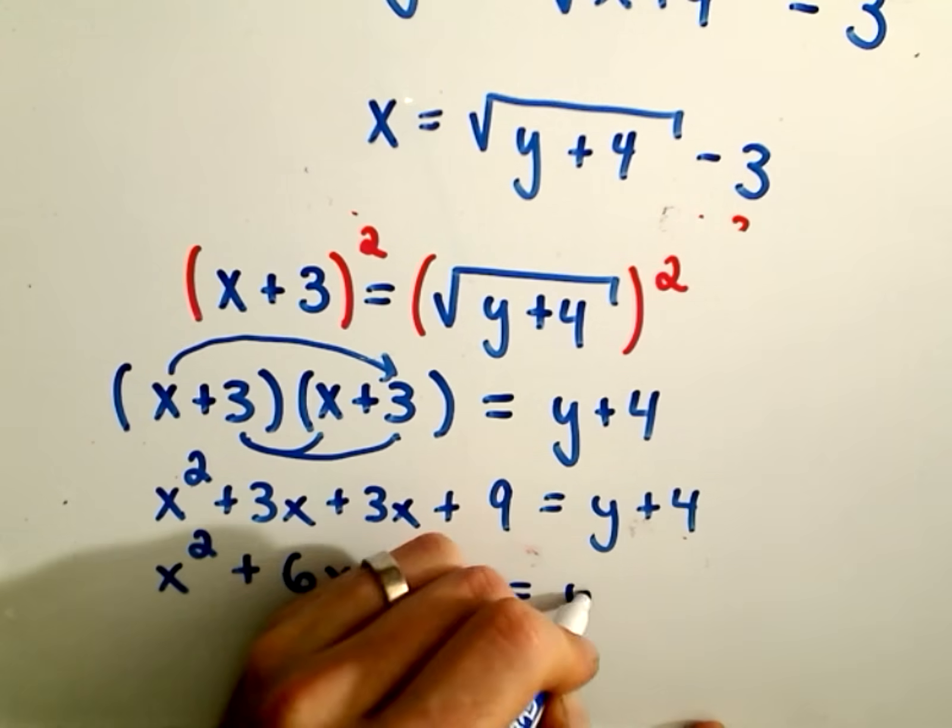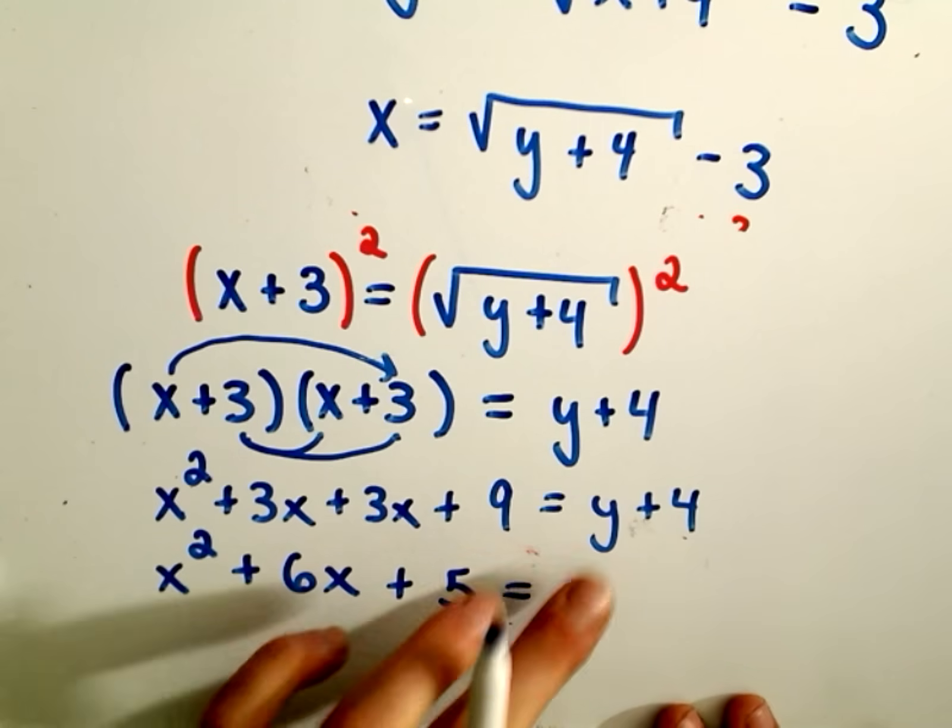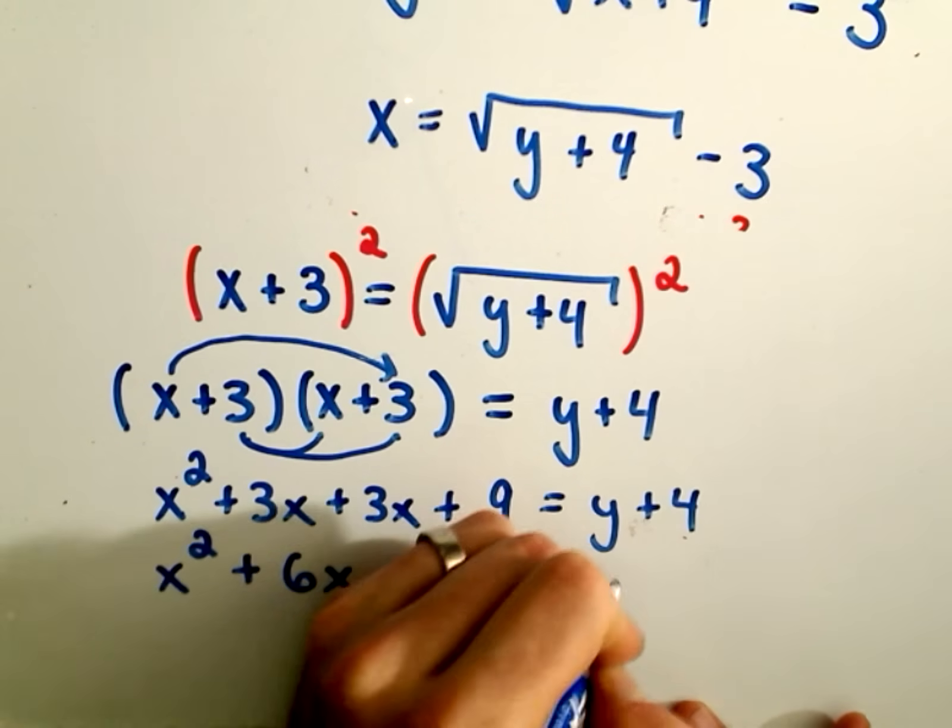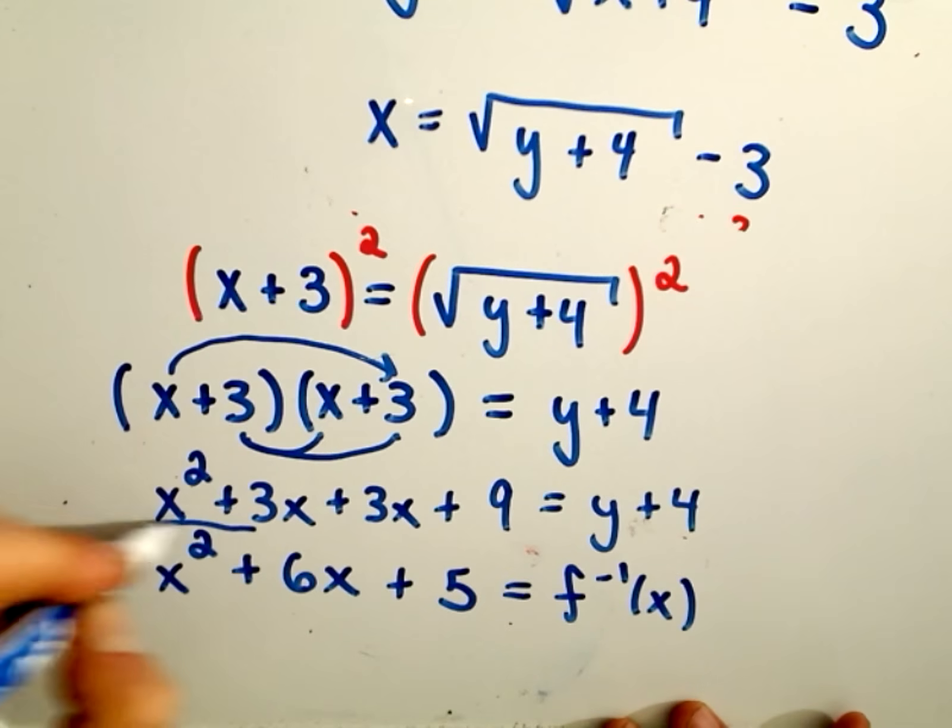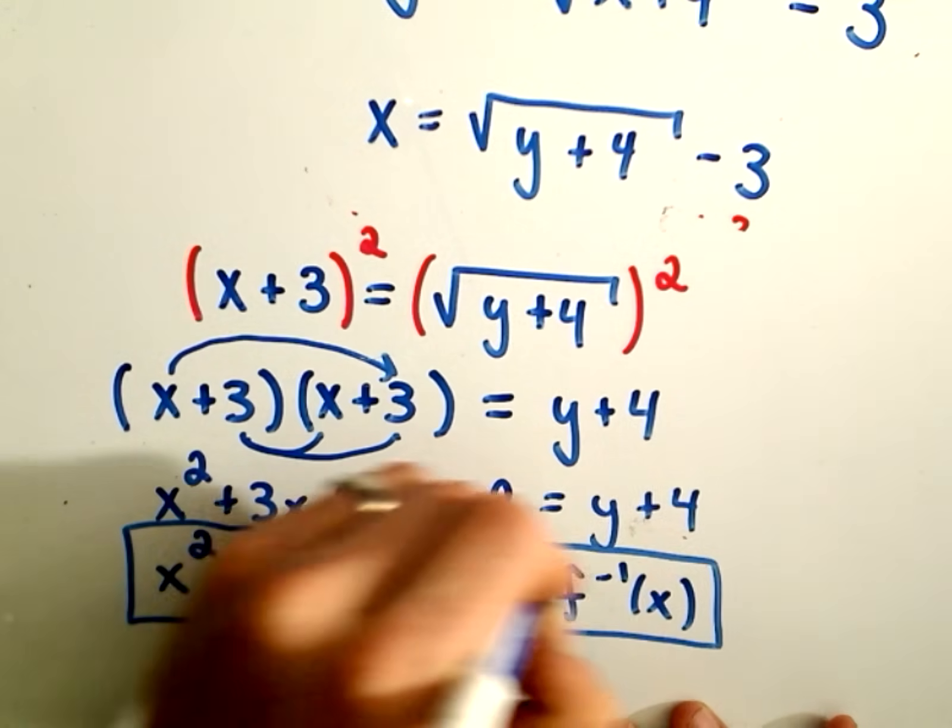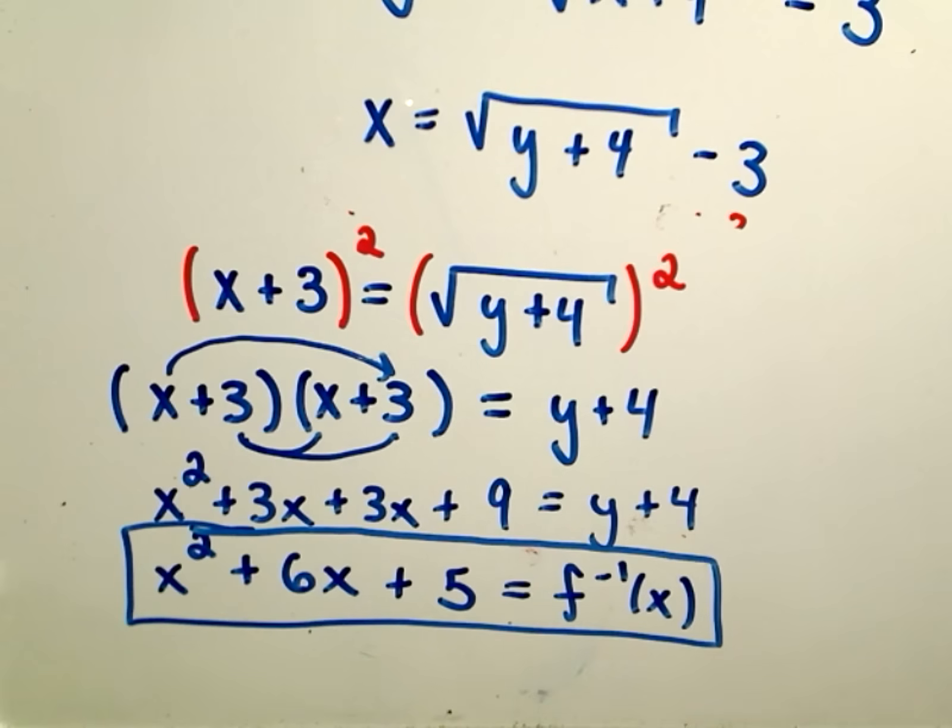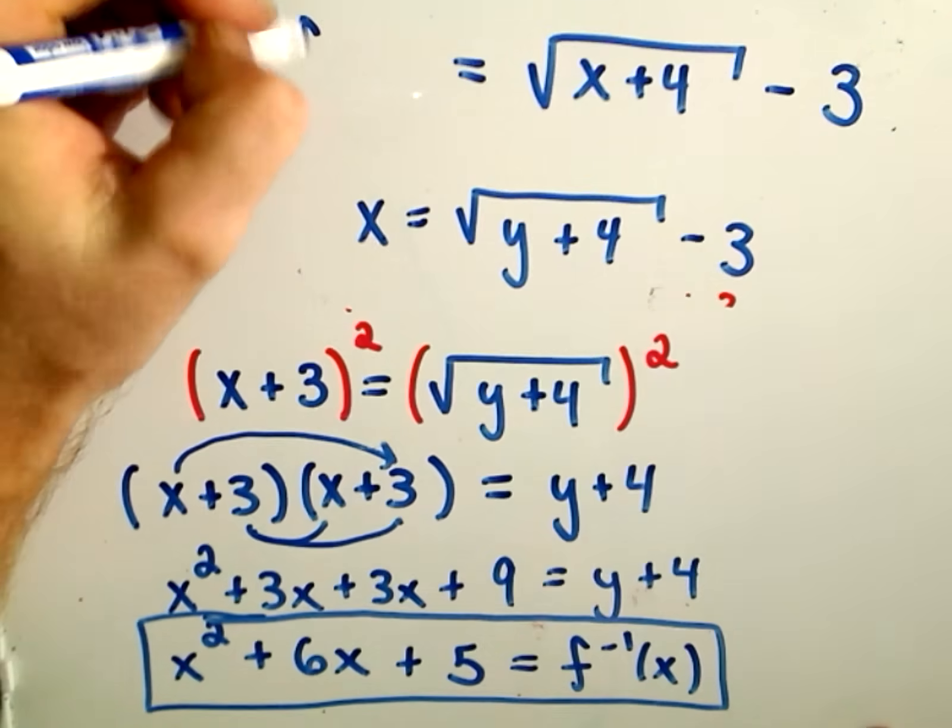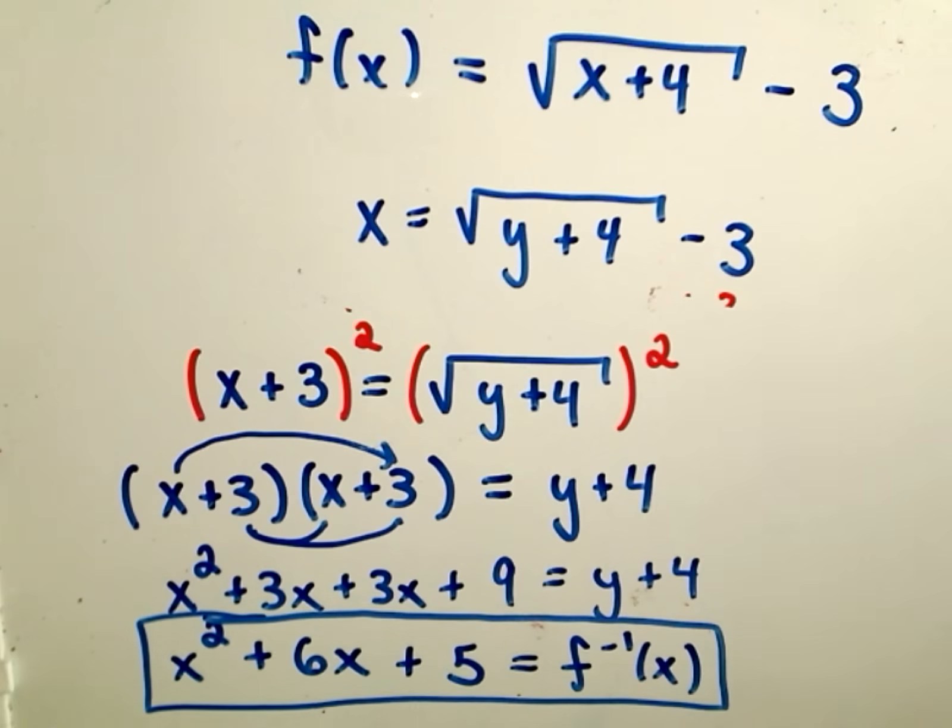And that equals y, or equivalently, I can say that this is the inverse function of my original function. So now we've found the inverse function if our original function f of x was the square root of x plus 4 minus 3.